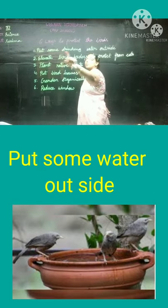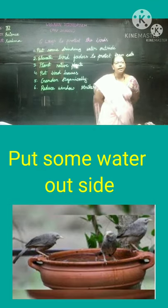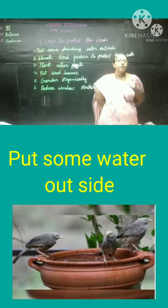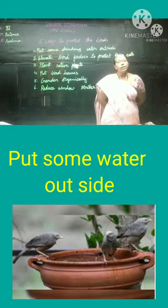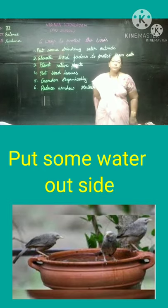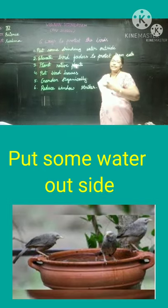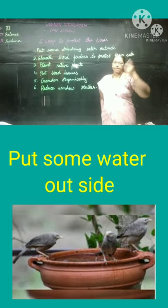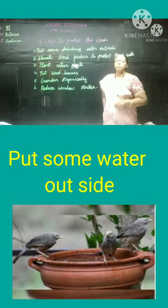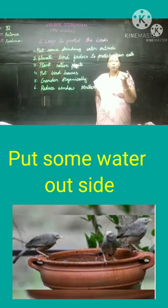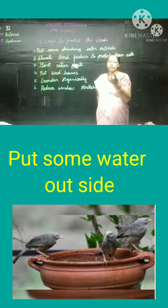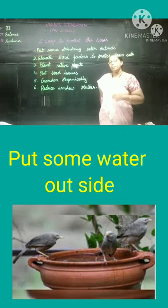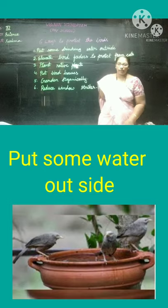The first way is to put some drinking water outside. In summer, birds and animals do not get proper water to drink. So we have to keep some drinking water near our window, outside, or on the terrace so that birds will come and drink the water.